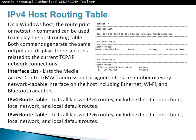It will have an IPv4 routing table — a list of all known IP routes, including direct connections, local network, and local default routes. Then we have an IPv6 routing table — a list of all IPv6 routes, including direct connections, local network, and default routes.